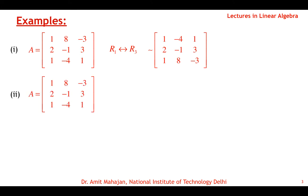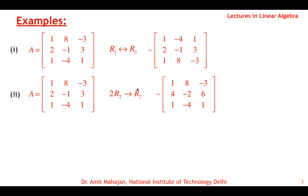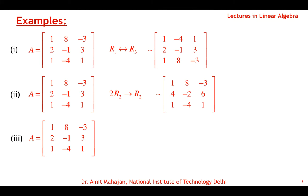For the second operation, take the same matrix A and multiply R2 by the non-zero constant 2 — so 2×R2 with impact on R2. Every element of R2 is multiplied by 2: 2×2=4, −1×2=−2, 3×2=6. The first and third rows remain unchanged. For the third operation, apply R1 + 2×R2 with impact on R1.